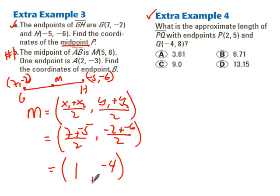Now, I'll move over into the distance formula. So, they say, what is the approximate length of PQ? So, first we'll draw PQ. There's PQ. And the coordinates of PQ with endpoints of P(2, 5) and Q(-4, 8). So, now we need the distance formula.